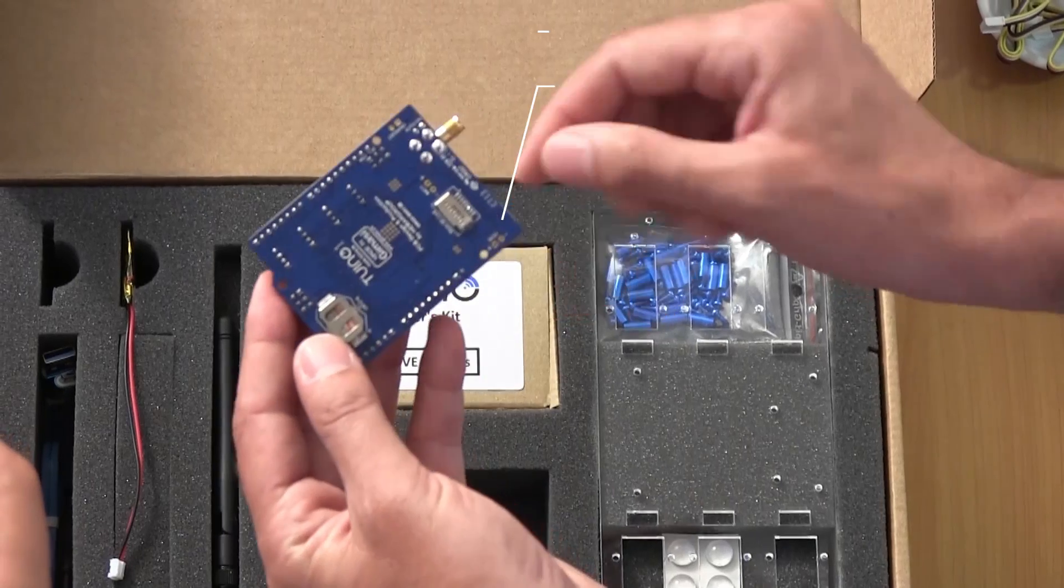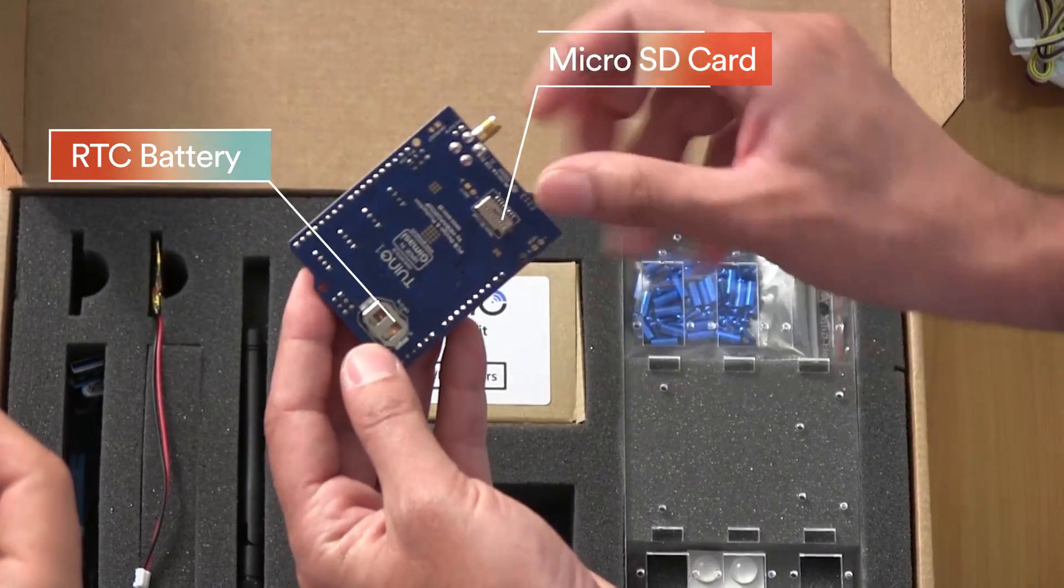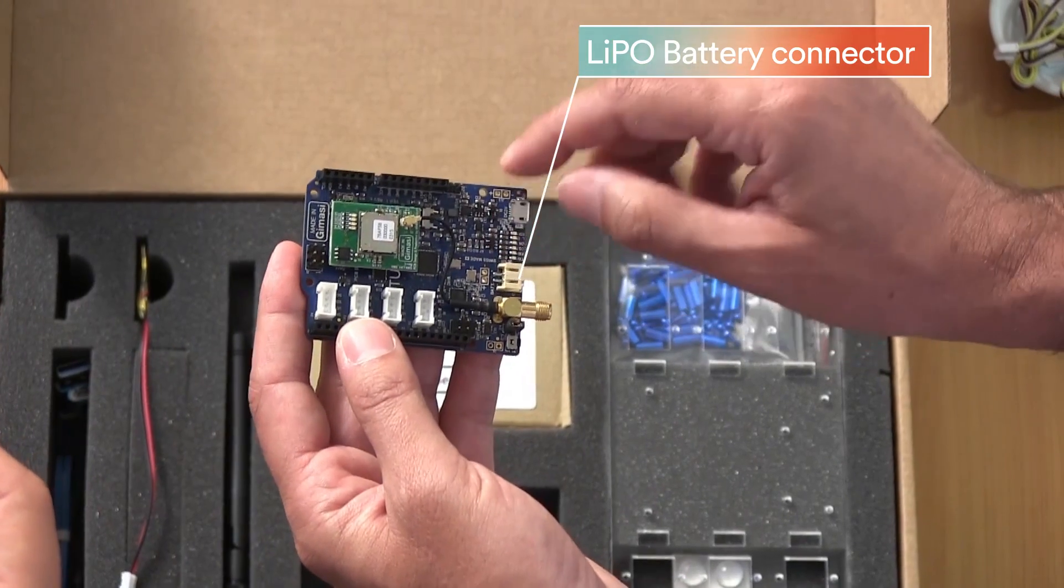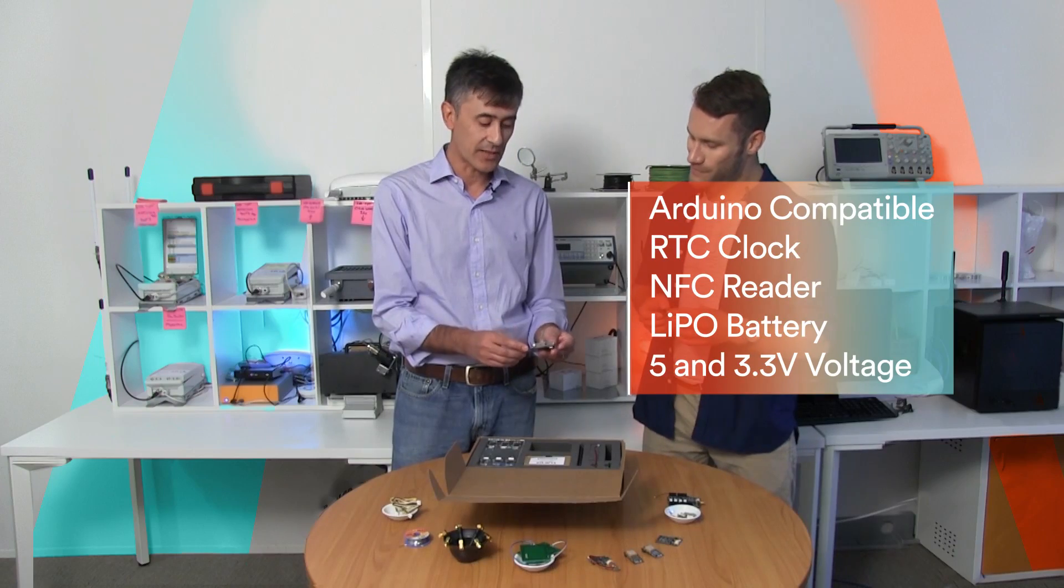This dev kit is also a real surprise because it comes with an NFC reader, a micro SD card slot, an RTC clock, battery and dual voltage on the outputs. I want mine!